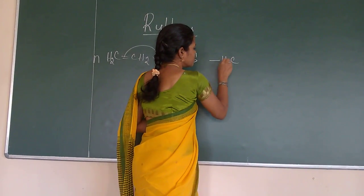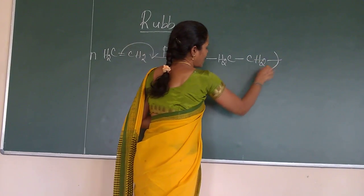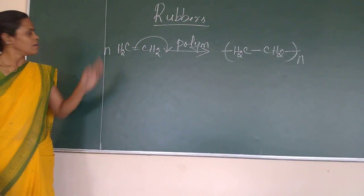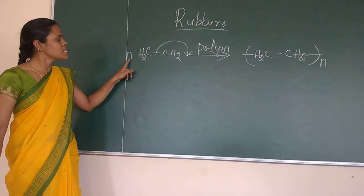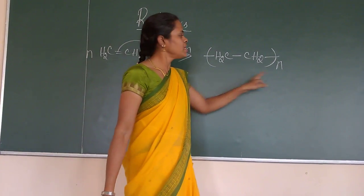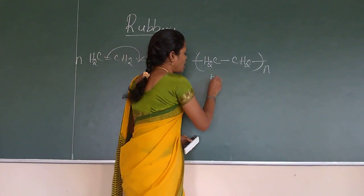Now this double bond between these two CH2 is getting shifted and it is utilized in the bond formation. So we will get CH2 single bond CH2 bracket N types. So if it is monomer means the N we must represent at the front. And if it is polymer means we must mention the N here. So this is polyethylene.